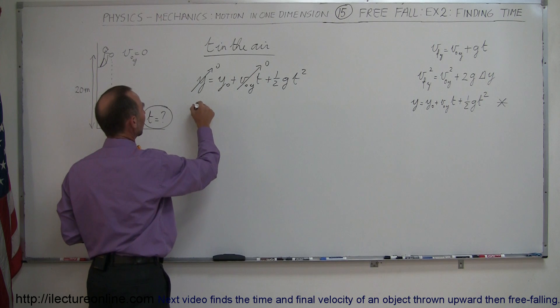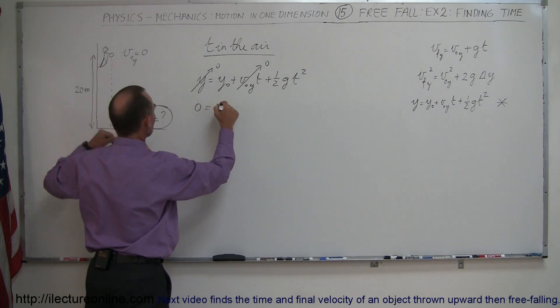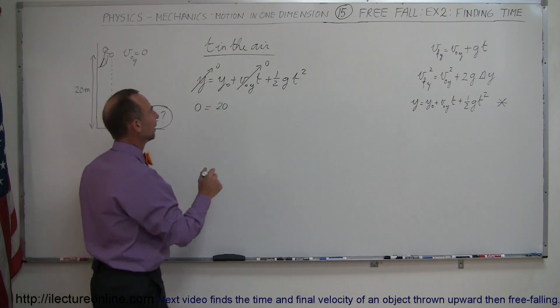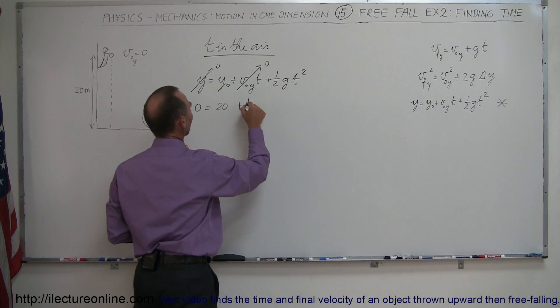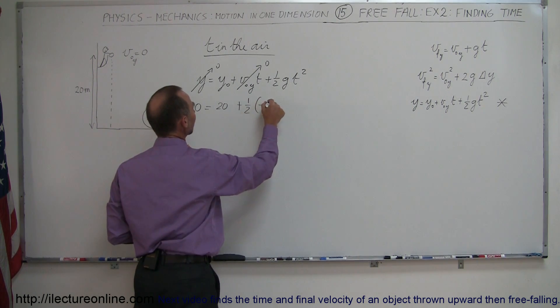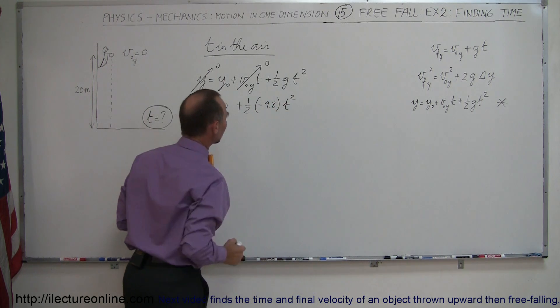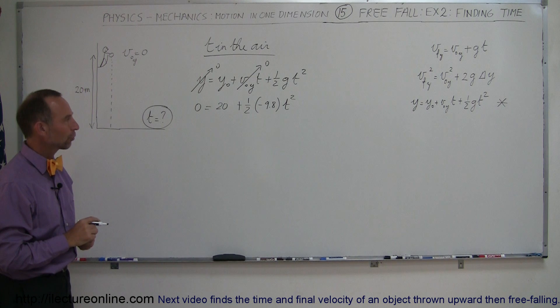So then all we have left is zero equals the initial height, which is 20 meters. And I'll leave the units off so it's a lot cleaner. Plus one half times g, g is minus 9.8 meters per second squared, times t squared. So now we have to solve that equation for t.